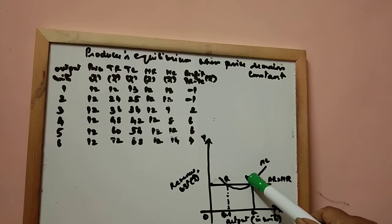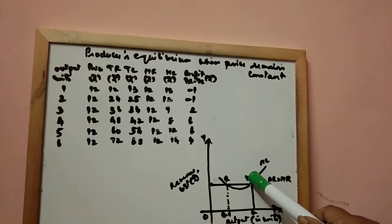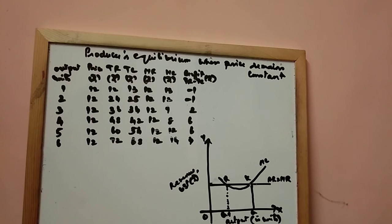So this is the equilibrium point. This point will be taken as producer's equilibrium point because the two conditions are satisfied.